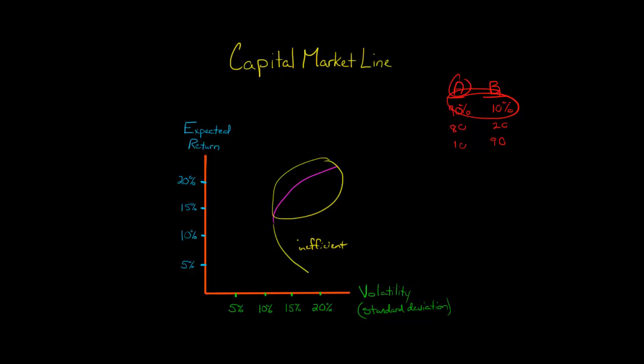All the ones on the purple line are efficient portfolios. Here's where the capital market line comes into play. We've just been thinking about a portfolio that would have stock A and stock B in different combinations, but what if we added to that — we said we could actually also have some combination of the risk-free asset.